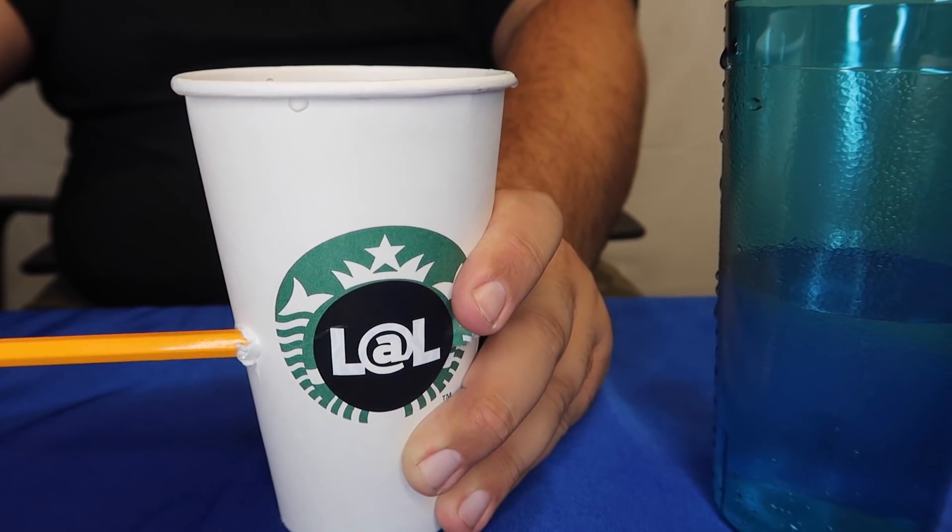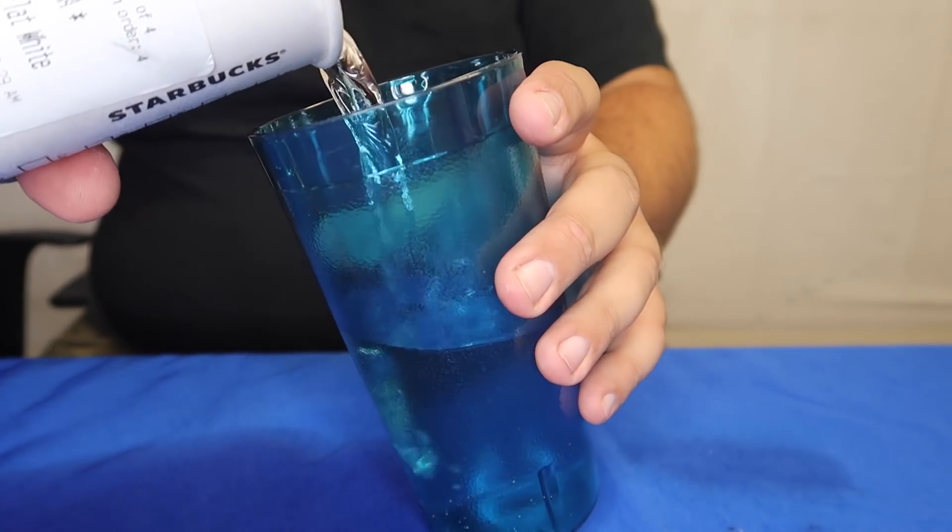If you have the pencil through the cup, you can then remove it just like this for your spectator a drink. And that is the secret of the magic pencil through the cup trick.